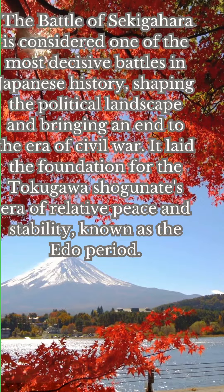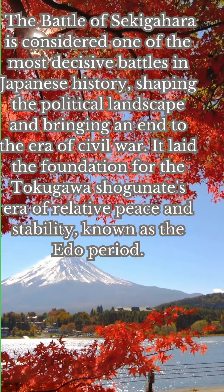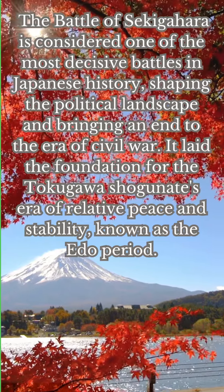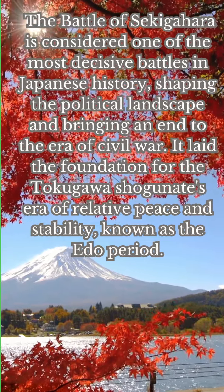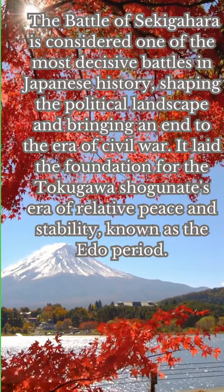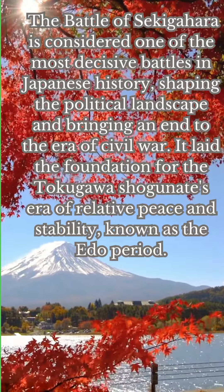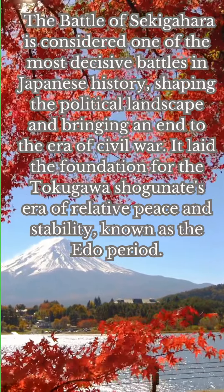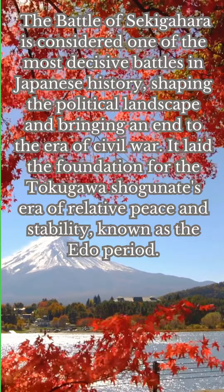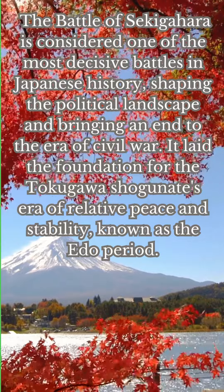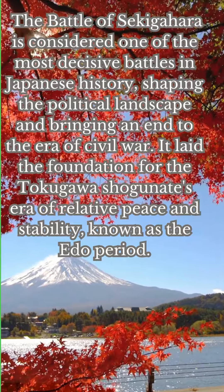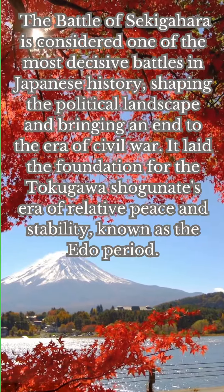The Battle of Sekigahara is considered one of the most decisive battles in Japanese history, shaping the political landscape and bringing an end to the era of civil war. It laid the foundation for the Tokugawa shogunate's era of relative peace and stability, known as the Edo period.